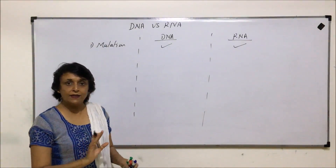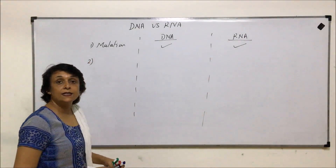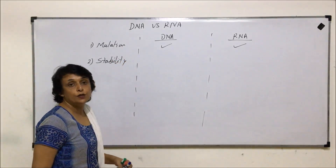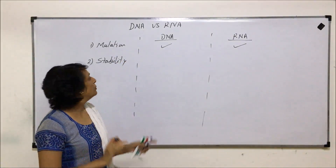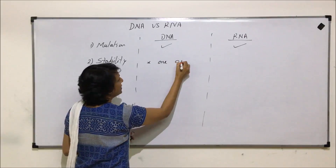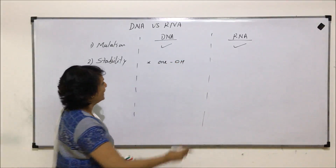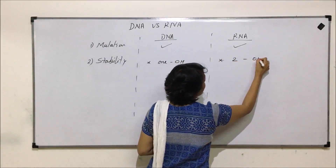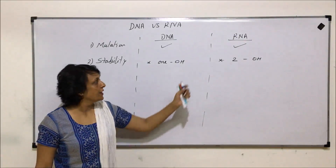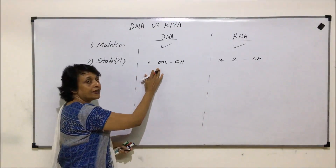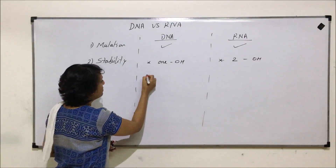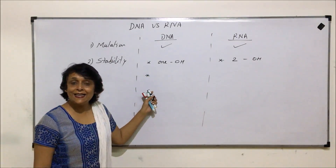The second point is stability. The molecule which has to be inherited should be stable. DNA has one OH functional group, whereas RNA has two OH functional groups. The more functional groups a molecule has, the more reactive it is. On this basis, DNA appears to be more stable compared to RNA.